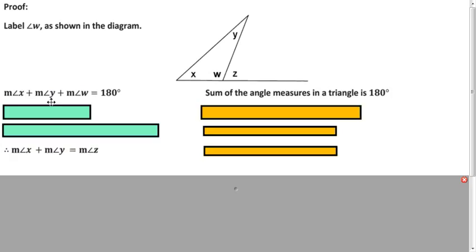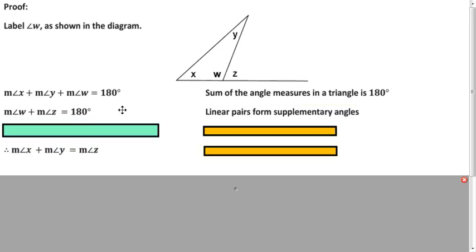Okay, so we have this first equation. We want to get to the final one. The first one involves X, Y, and W. And the final one involves X, Y, and Z. So we need to get Z involved somehow. So what statement can we say about Z here? Well, Z and W form a linear pair, so they are supplementary. So their measures add up to 180 degrees. And now we have two equations which are each equal to 180 degrees. So we can set them equal to each other.